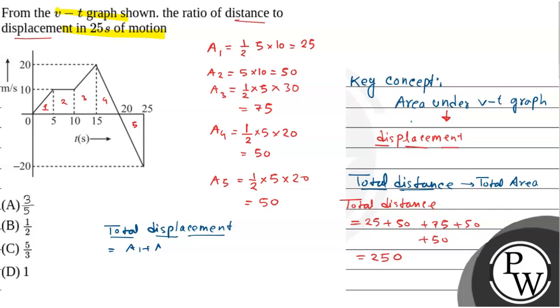So total displacement will be A1 plus A2 plus A3 plus A4 minus A5, because A5 is in negative direction. This will equal 25 plus 50 plus 75 plus 50, which equals 150.